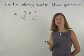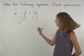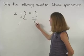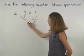On the right side, 16 plus 3 equals 19, so we have z equals 19.